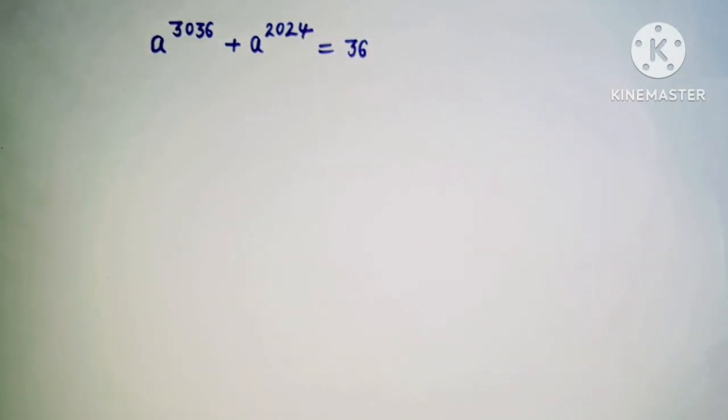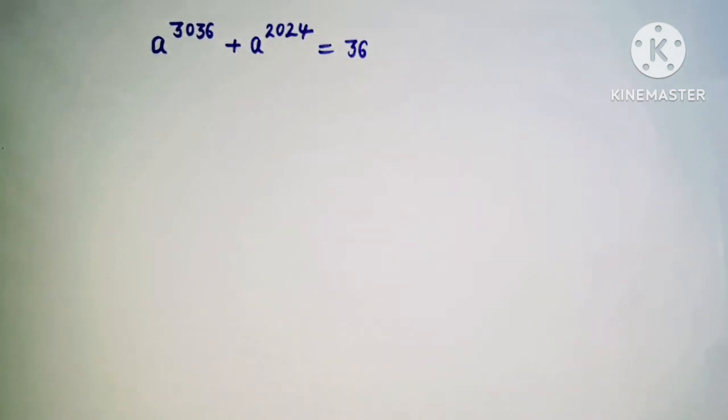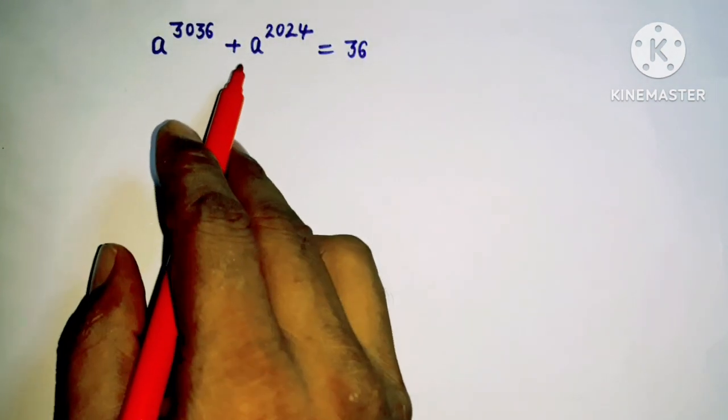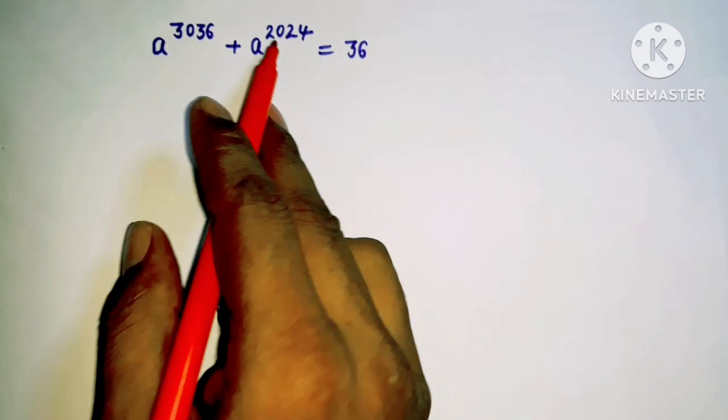How can we get the value for a here? Let's proceed to solve this one. Here you can see that this number is greater than this number and we can get the common from both by taking a to the power 2024 as common.